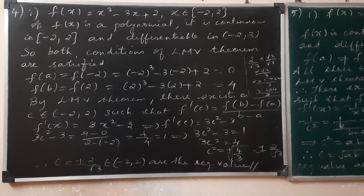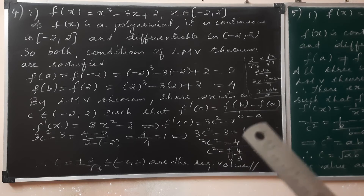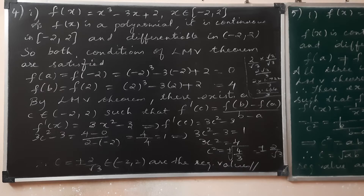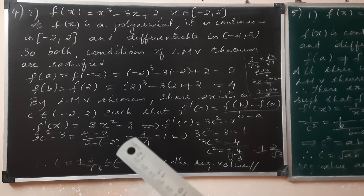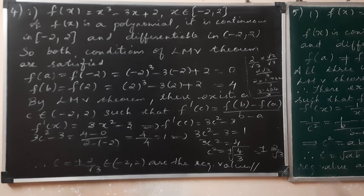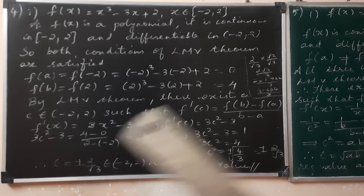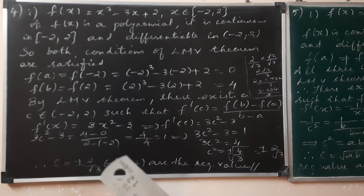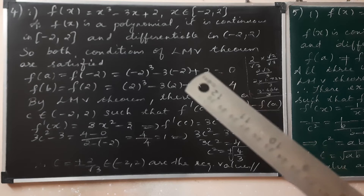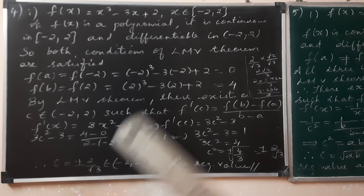Therefore, by LMV theorem, there exists a c belonging to the open interval (-2, 2) such that f'(c) equals [f(b) minus f(a)] divided by [b minus a]. Differentiating f(x) gives f'(x) = 3x² minus 3, so f'(c) = 3c² minus 3.